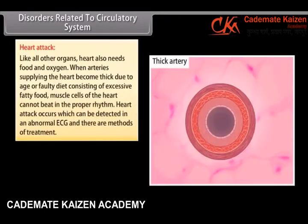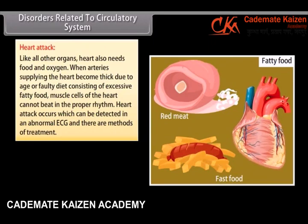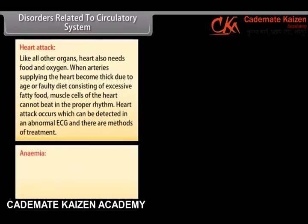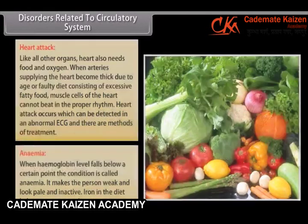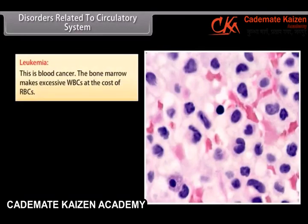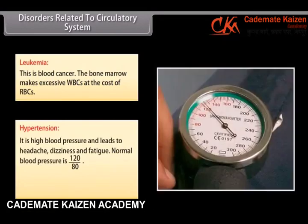Disorders related to the circulatory system. Heart attack: like all other organs, the heart also needs food and oxygen. When arteries supplying the heart become thick due to age or faulty diet consisting of excessive fatty food, muscle cells of the heart cannot beat in the proper rhythm. Heart attack occurs, which can be detected in an abnormal ECG, and there are methods of treatment. Anemia: when hemoglobin level falls below a certain point, the condition is called anemia. It makes the person weak, pale and inactive. Iron in the diet helps remove anemia. Leukemia: this is blood cancer; the bone marrow makes excessive WBCs at the cost of RBCs. Hypertension: it is high blood pressure and leads to headache, dizziness and fatigue. Normal blood pressure is 120 over 80. High blood pressure is also caused by anxiety.